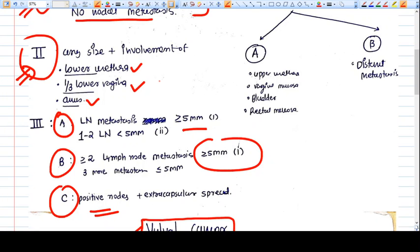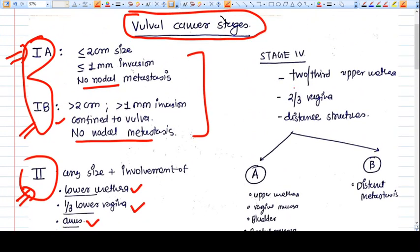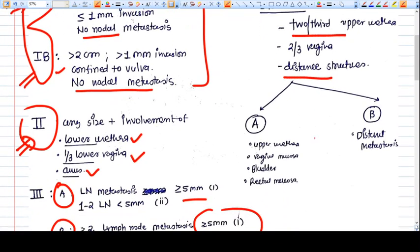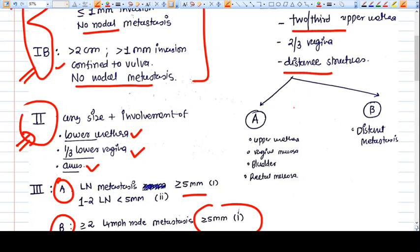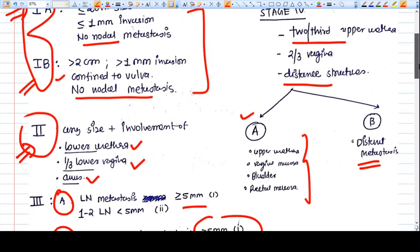Stage 4 is when the tumor involves two-thirds of the upper vagina, two-thirds of the upper urethra, and distant structures. It's again divided into A and B. Stage 4A means upper urethra, vaginal mucosa, bladder, rectal mucosa are involved. Stage 4B means distant metastasis. So it is quite understandable.